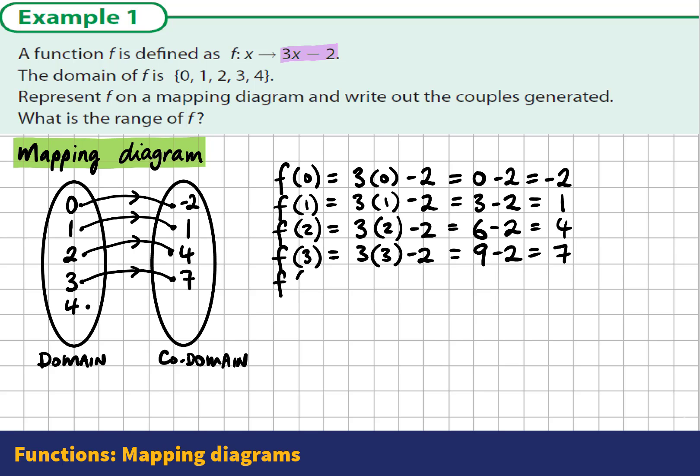And lastly, when we input 4, f(4) will give us 3 times 4 minus 2, which is 12 minus 2, which is equal to 10. So this is our completed mapping diagram.